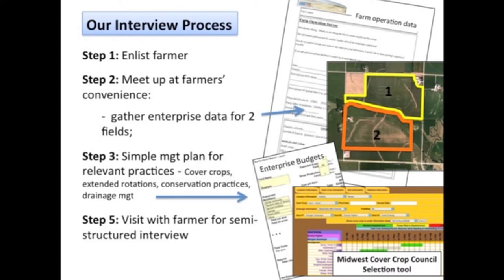Very simply, this is our process: we've got extension educators in nine different states, and it's their job to recruit farmers. So far we've got 88 farmers on board to do these interviews, and we're working to get to the 200 level. They meet up with farmers at their convenience. This first phase, in two parts, involves gathering enterprise data for two different fields — one that's a pretty good performing field and another that they're challenged by.